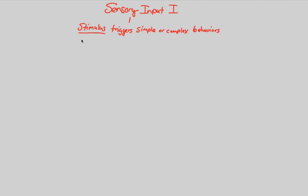For example, we can understand this idea of sensory input through something called a fixed action pattern. This is a great term to describe a very easy-to-understand sensory input behavior.